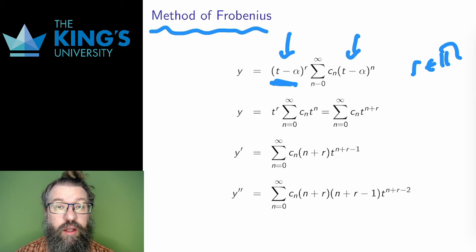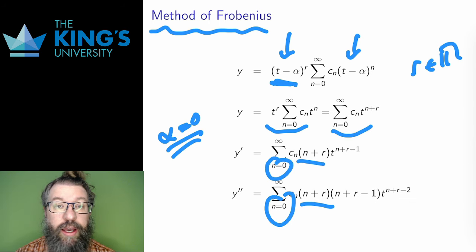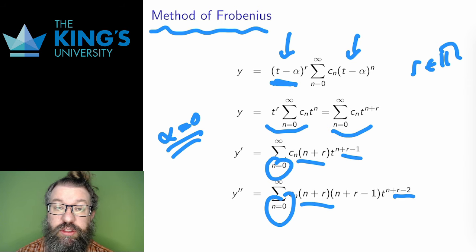So what do I do? Well, of course, I put the series into the DE and see what happens, as always. I'm going to do the general situation here at alpha equals 0, just for a bit of clarity in the notation, although it does work at an arbitrary center point, of course. Here is the series and its derivatives. Note that I don't change the starting index this time. Since the exponent is t to the n plus r, and r could be literally any real number, there's no guarantee that there are constants which will be removed by successive differentiation.